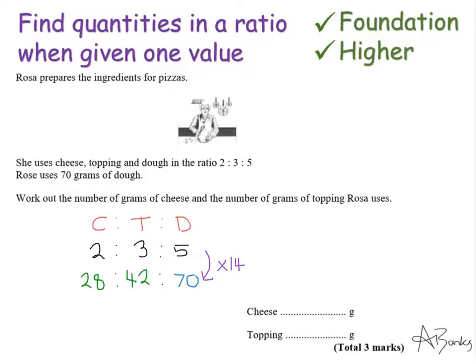These are the grams of cheese and topping when I have 70 grams of dough, so these are my answers. I'm just going to write that on my answer line: 28 grams of cheese and 42 grams of topping.